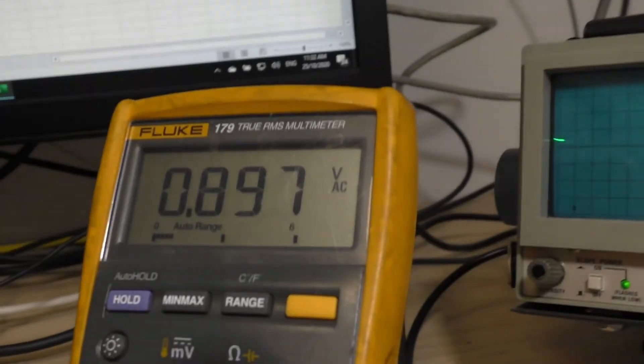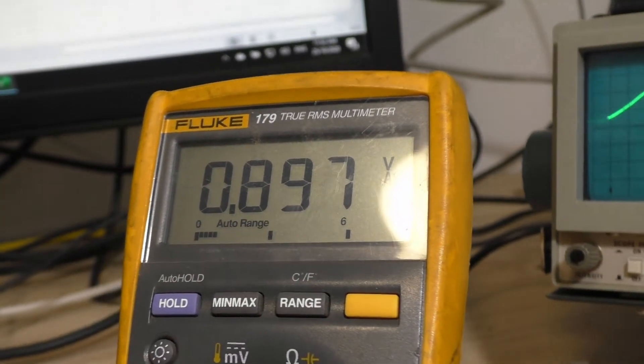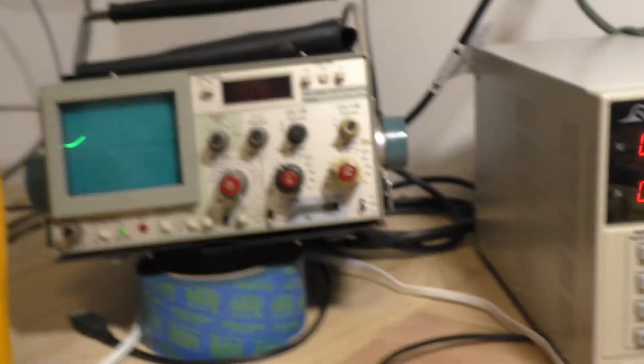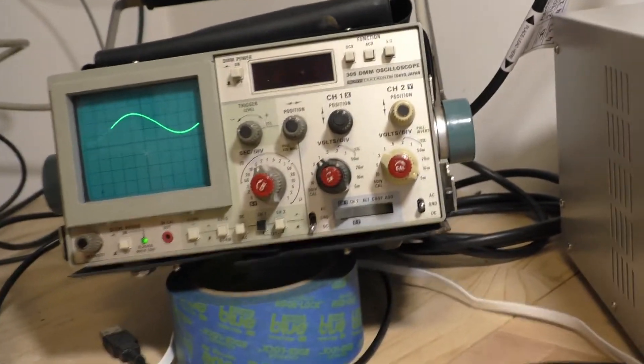If you look at what the voltmeter is reading, 0.897, I personally think that's pretty good for some backyard measuring.